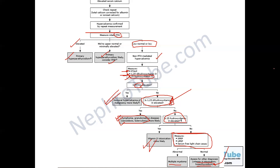To summarize this approach: any patient with hypercalcemia should have drug history checked for vitamin D and vitamin A intake. Order from the start: PTH, 25-hydroxyvitamin D, and thyroid profile especially if hyperthyroidism is suspected. Exclude malignancy by history and examination, and order a chest X-ray and lymph node examination.